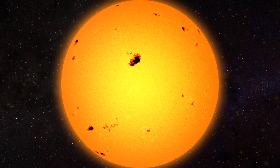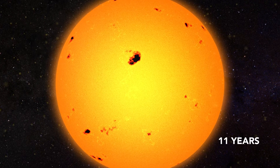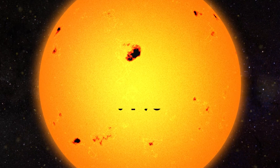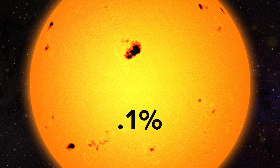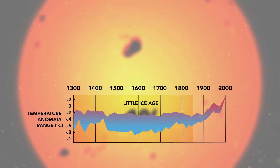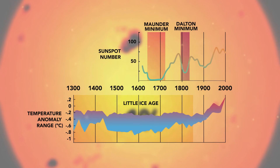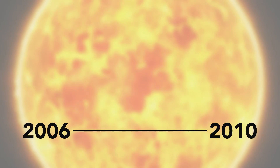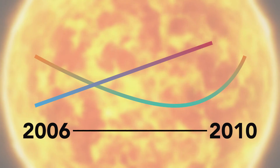Along with the Milankovitch cycles, the sun itself has changed in the amount of energy it is producing. These changes are closely linked to sunspots that increase in number every 11 years or so. Sunspot cycles cause little change in the amount of energy reaching the top of the Earth's atmosphere — less than one tenth of a percent. Some studies show that the Little Ice Age in Europe from 1300 to 1850 coincided with periods of low sunspot activity called the Dalton and Maunder minimums. However, compilations of many paleoclimatic records show that the Little Ice Age did not occur worldwide, and the cold events did not occur at the same time in different regions. Furthermore, from 2006 to 2010, sunspots were at a minimum, yet global temperatures continued to rise.